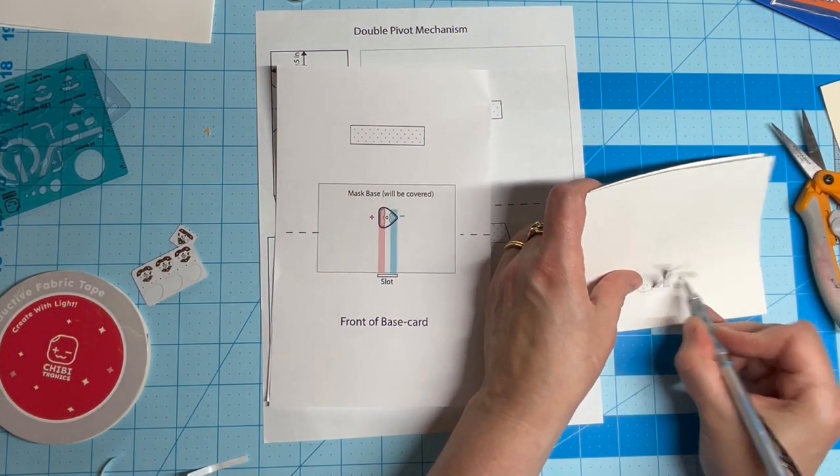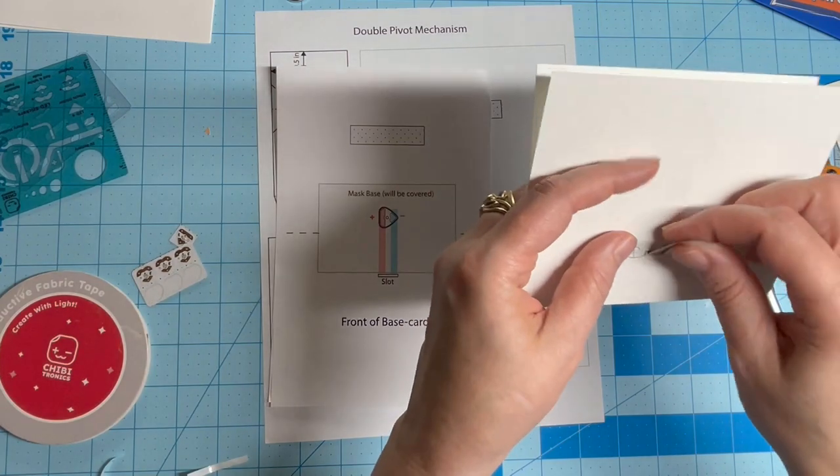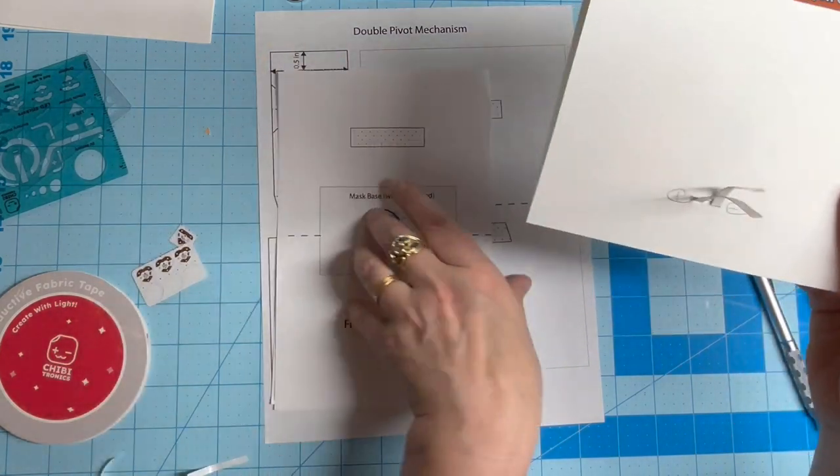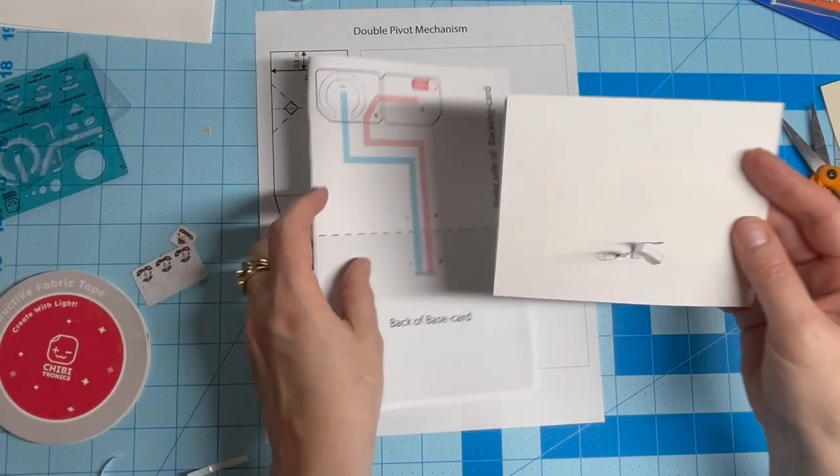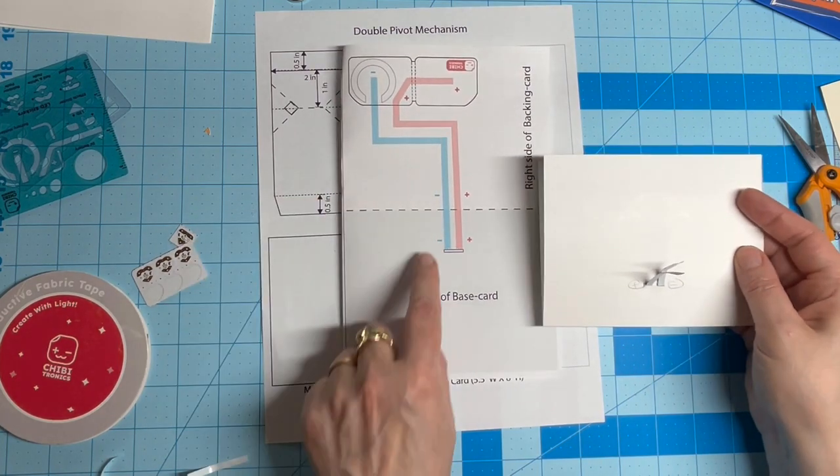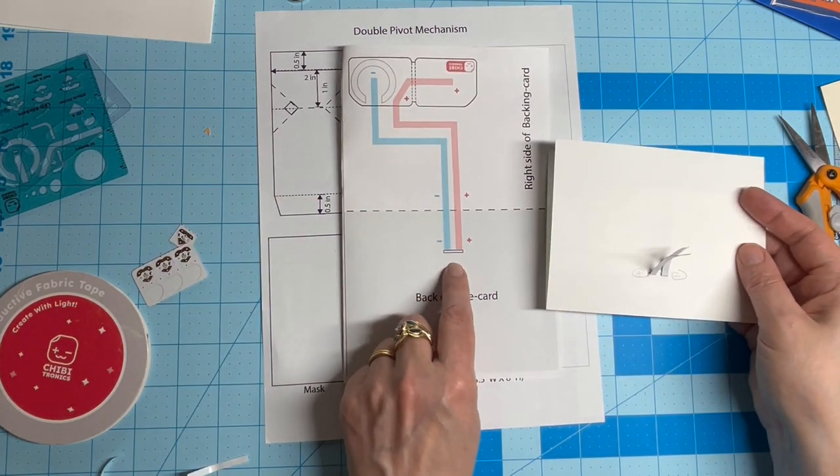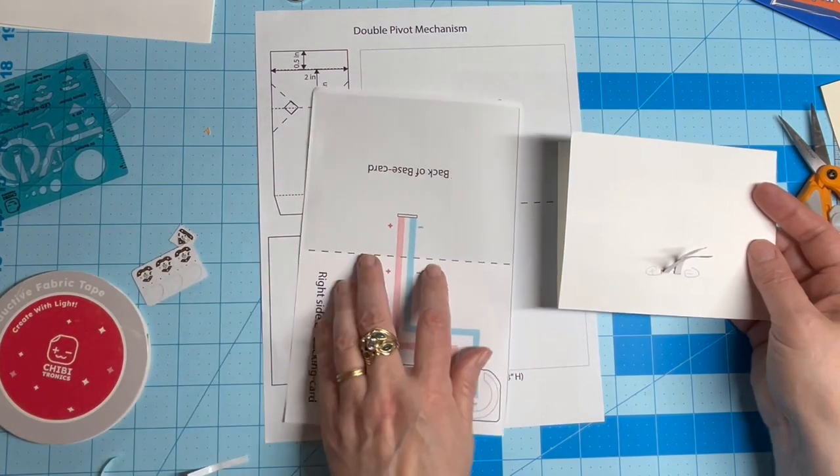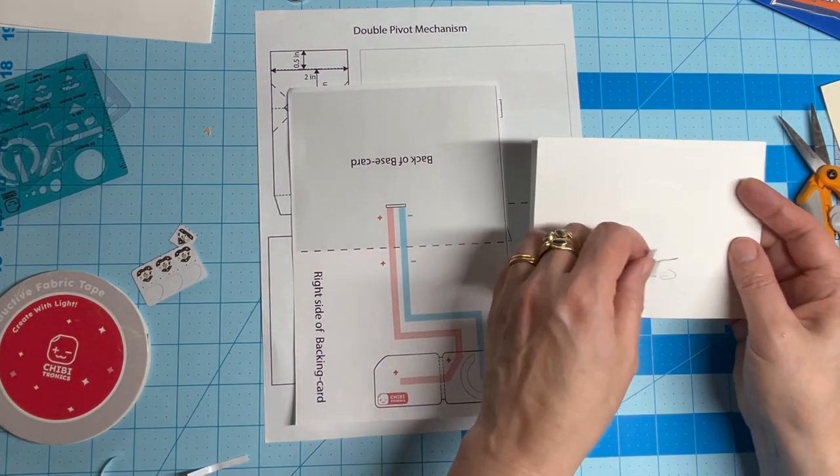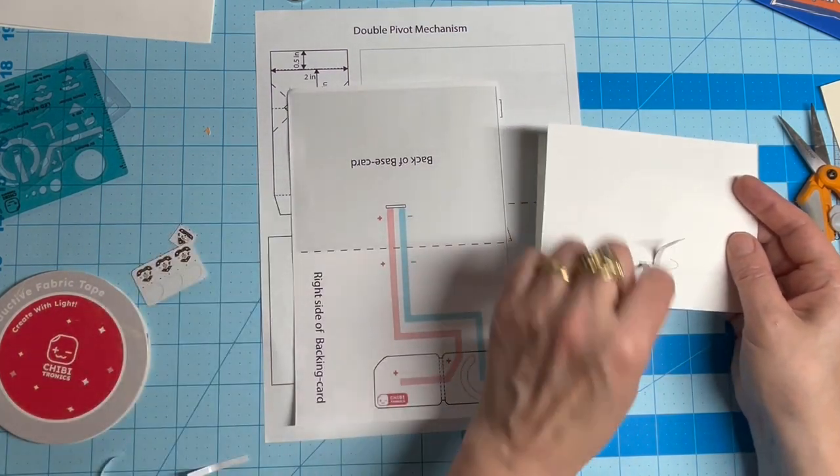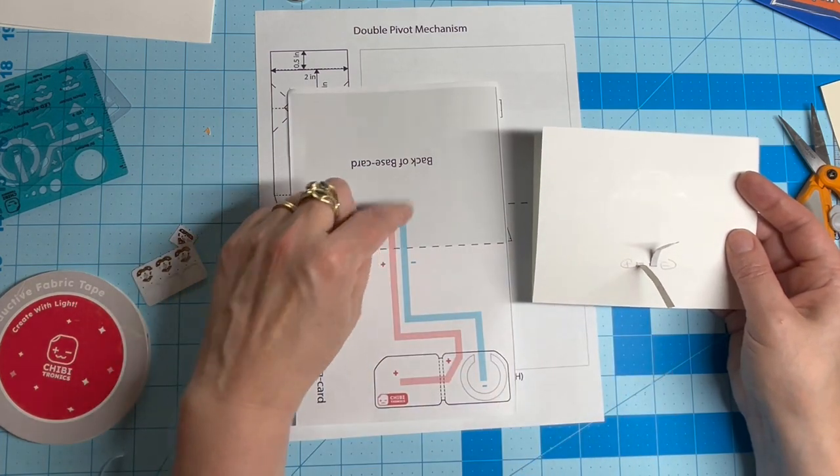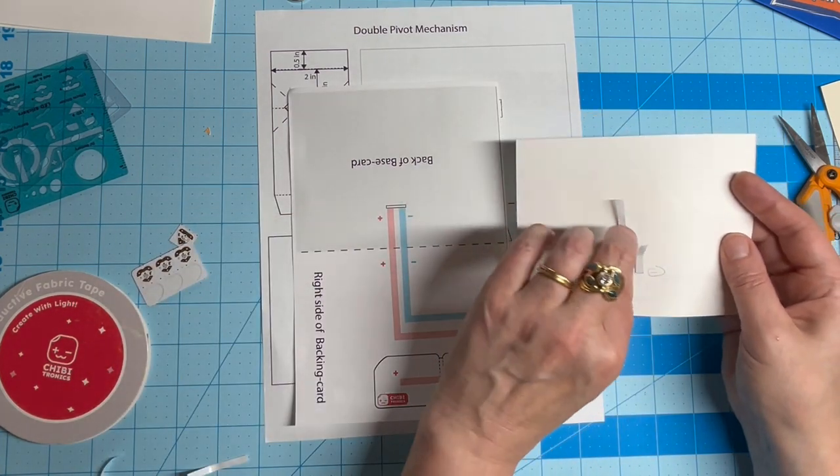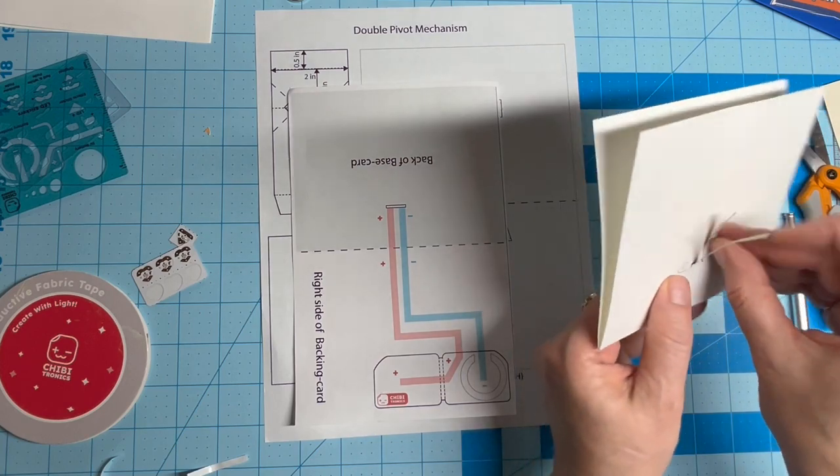It's helpful to mark the correct polarity on the back side of the base card to keep yourself from getting confused about which side is positive and which is negative. Use a circuit diagram as a guide to orient yourself. You're going to be bringing the conductive fabric traces toward the center crease, but do not wrap around it.